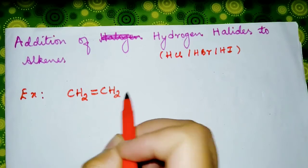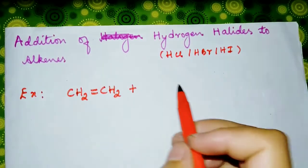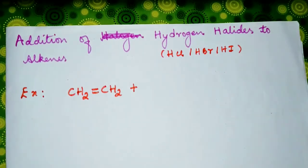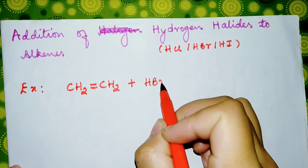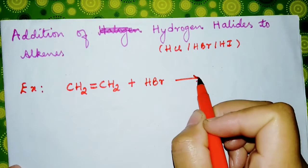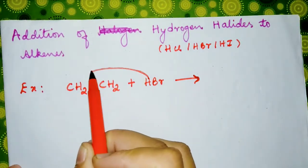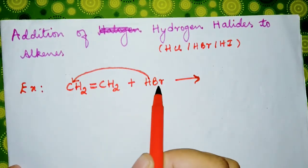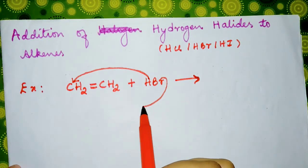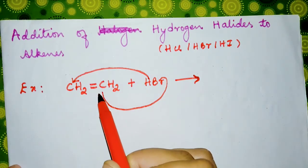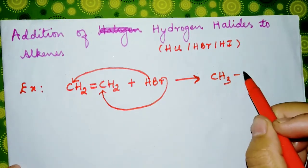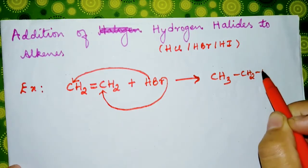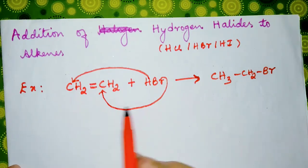Now let's say we add hydrobromic acid HBr. In this case, hydrogen can combine with this carbon and the bromide ion can combine with this one, so we get CH3-CH2Br.